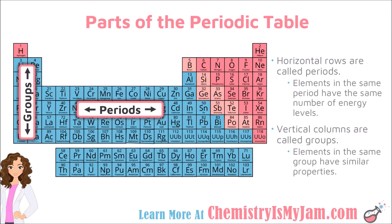In terms of the arrangement, you should be aware of what the rows and the columns on the periodic table are called and what they tell us. Horizontal rows on the periodic table are called periods, and the elements in the same period have the same number of energy levels. Aluminum, for example, is in the third period and it has three energy levels. All of the elements in period 3 have three energy levels.